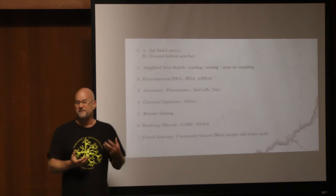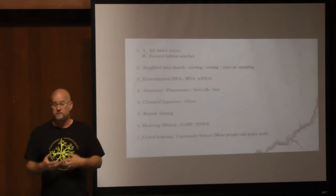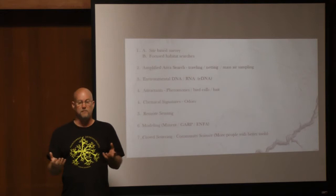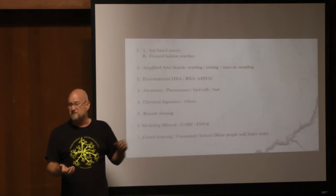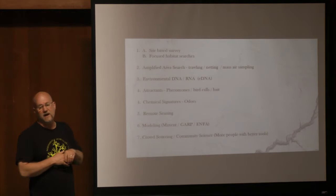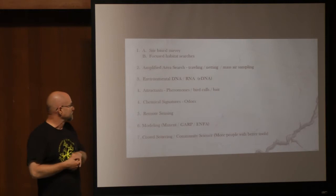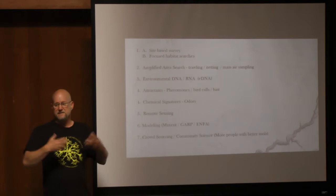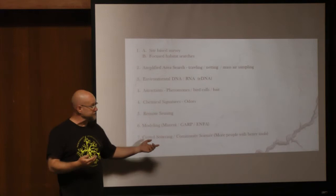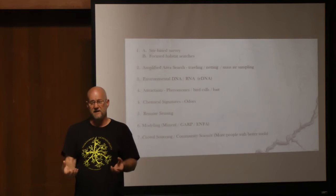We have remote sensing to do all sorts of interpretation — drone imagery, 3D modeling, Landsat and MODIS imagery to help determine where we have appropriate habitat. And likewise, modeling using maximum entropy distribution modeling. I have GARP — genetic algorithm for rule set predictability — or ecological niche factor analysis tools that help model where appropriate habitat is for more informed searches. And what's really becoming a powerful tool right now is crowdsourcing with community science, getting more people with tools in their hands who can look for what we want to find.